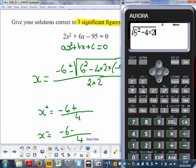I'm going to have to put it in brackets, so bracket 6² minus 4 times 2, times -95. Let's find out.